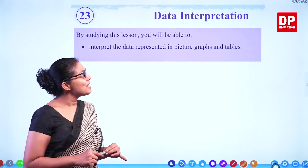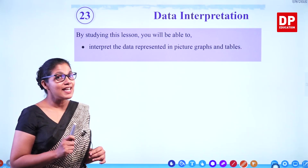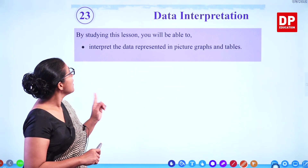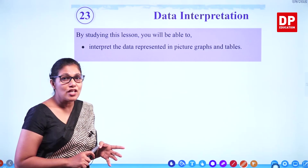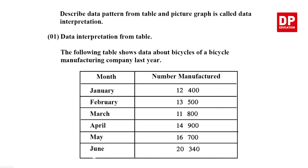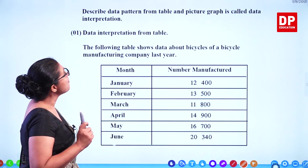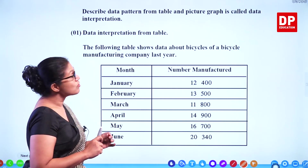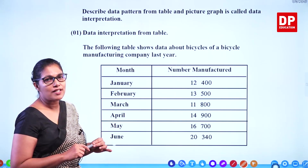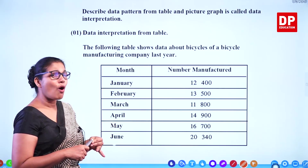Hello children, today I'm here to teach you chapter 23 in your textbook, Data Interpretation. Last chapter we did Data Collection and Representation. So in this lesson we are interpreting data represented in picture graphs and tables. So we are trying to describe data patterns from tables and picture graphs — that's called data interpretation.